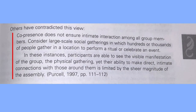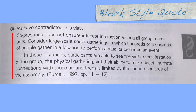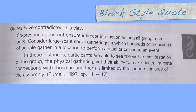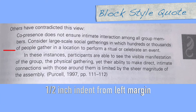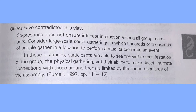The last example I'll be showing you is for a block style quote. When you have 40 or more words, display it in a freestanding block of text and omit the quotation marks. Indent the block of text half an inch from the left margin, double space the entire quote, and place your parenthetical citation after the final punctuation mark.